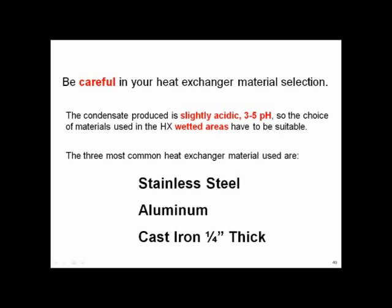Let's look at heat exchanger construction and condensate. When you've got water vapor raining in the boiler and mixing with CO2, you're going to form carbonic acid with a pH of around 3 to 5. That's just how the combustion works. This acid is going to form on the wetted areas of the heat exchanger below 130 degrees. You've got to make sure you pick the right heat exchanger material.